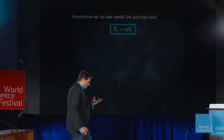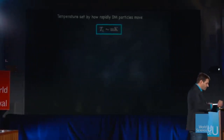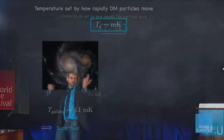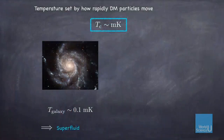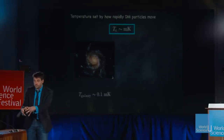Here's the key piece of physics: the temperature of the dark matter is set by how fast the particles are moving in the halo. In a galaxy, you can work out that the dark matter particle motion gives them a temperature of order 0.1 millikelvin — below the critical temperature. So in galaxies, you expect them to be superfluid, at least near the center.